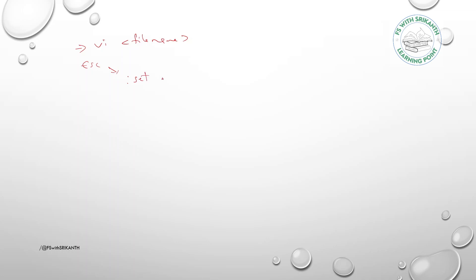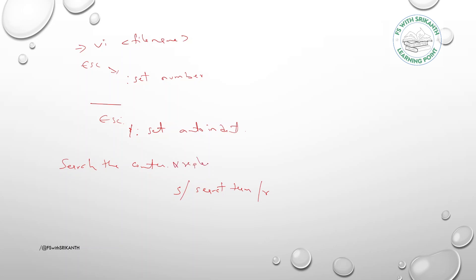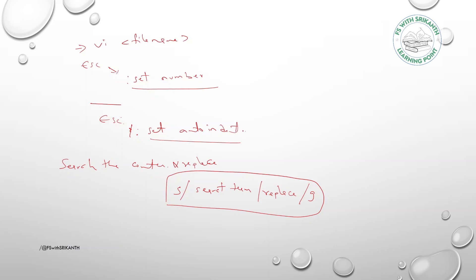When opening a file, to add line numbers press Escape then type ':set number' and it will add line numbers to every line. To enable indentation, use ':set autoindent'. To search and replace content, use the syntax: ':%s/search_term/replace_term/g' — the 'g' at the end is optional and applies the replacement globally.